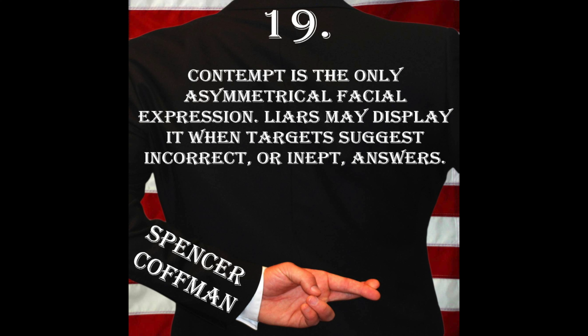Usually the most common place where you'll see contempt is if someone is lying and you're trying to get them to divulge information but they're not talking — maybe they say a few things to lead you on a path. Then the target starts saying, 'Well, is it here? Is it here?' And the person who is lying will display contempt when the target gets off track because they know they are fooling them — 'They're barking up the wrong trail, I'm winning.'